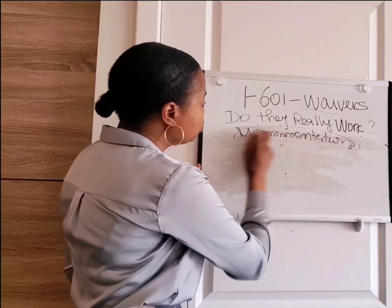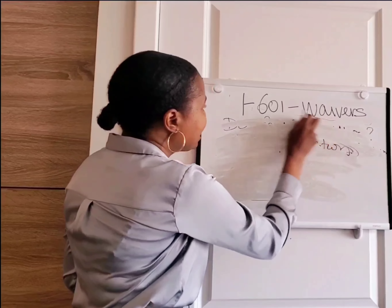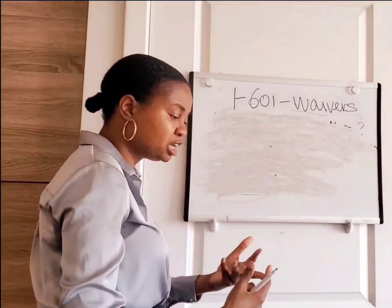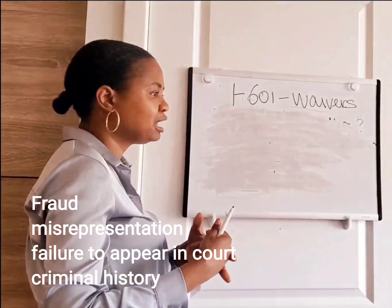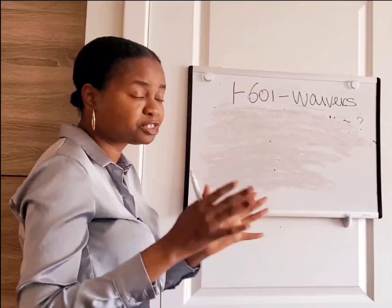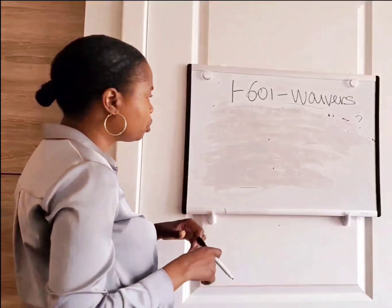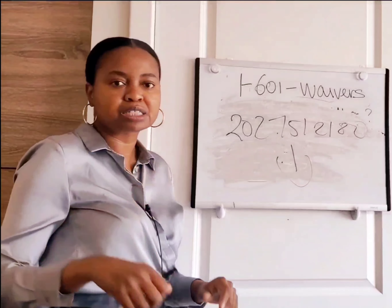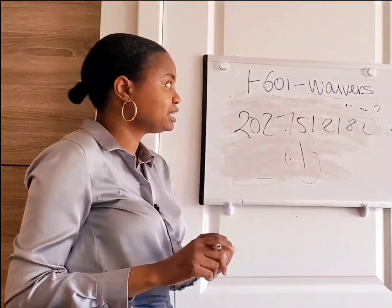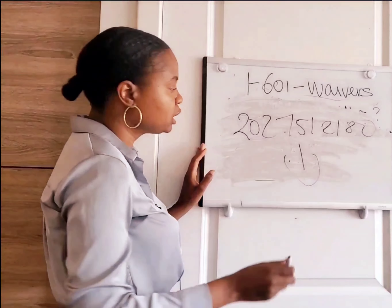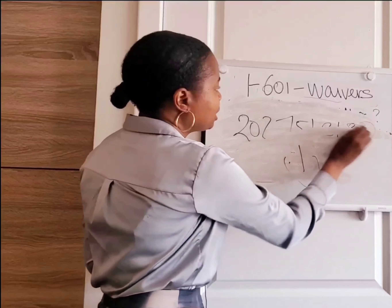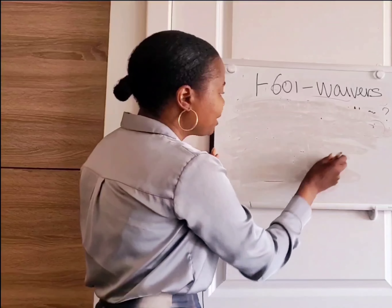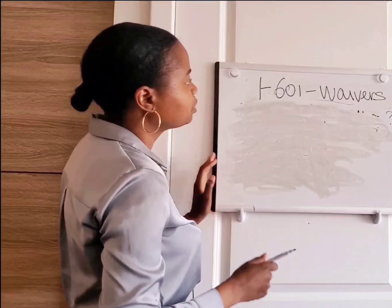We wanted to make sure you understand the purpose of a waiver and how it can actually work for you. You can apply for a waiver for many reasons — fraud, misrepresentation, failure to appear in court, extreme hardship, or certain crimes after rehabilitation. If you need a consultation, call 202-751-2180 — the consultation link is in the description box below. These types of waivers are not easy to win; you need a qualified attorney. Especially now with this administration, I'm seeing a lot of waivers being granted — so get yourself together and get your green card.